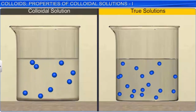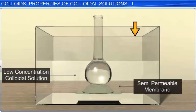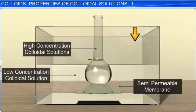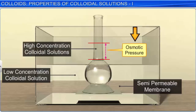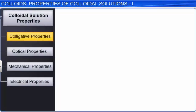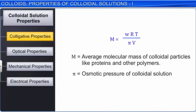Therefore, the number of particles in a colloidal solution is small as compared to that of a true solution. Hence, at a given concentration, the value of any colligative property of a colloidal solution is of a small order as compared to the value shown by a true solution. Colloids exhibit measurable osmotic pressure which can be determined with a reasonable degree of accuracy. This property of colloidal solutions is therefore used to determine the average molecular masses of certain colloidal particles like proteins and other polymers.